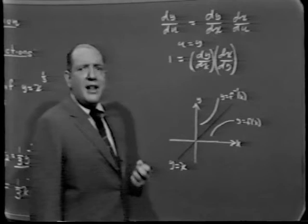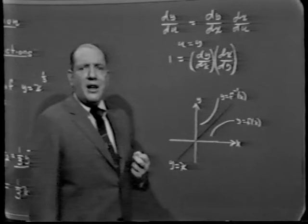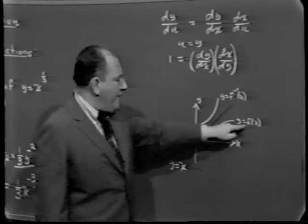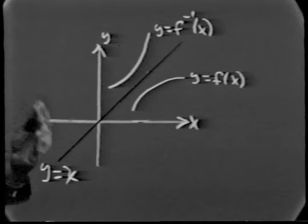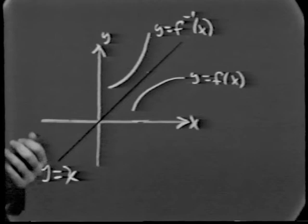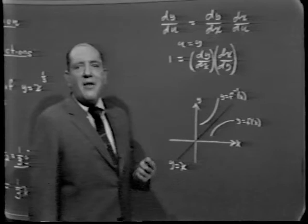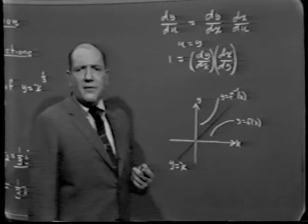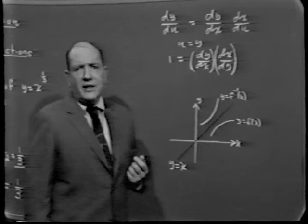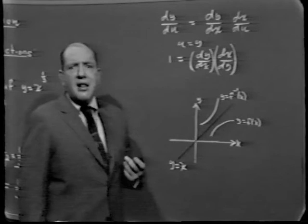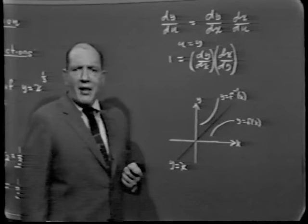Pictorially, what does it mean to say a function is differentiable? It means that when you plot its graph, the graph is smooth. If you take a smooth curve and take its mirror image with respect to the line y equals x, do you expect the curve to become unsmooth? The mirror image of a smooth curve will again be smooth. That's perhaps the most intuitive way of seeing why, if a function is differentiable, its inverse will also be differentiable. Of course, we must distinguish between geometric intuition and mathematical analysis.